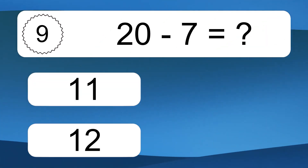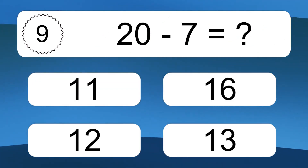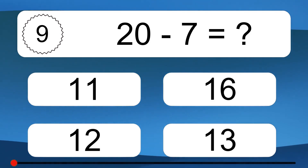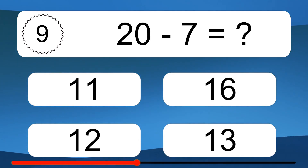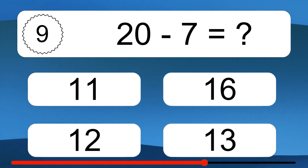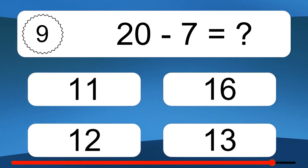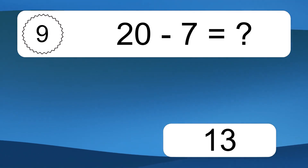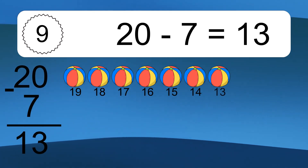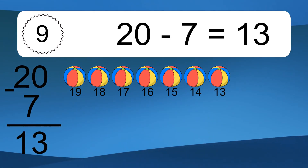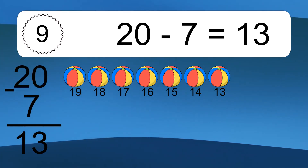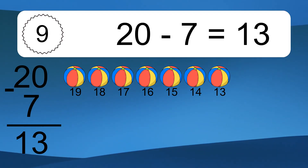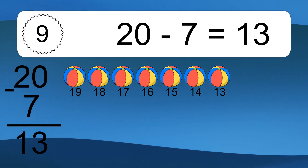20 minus 7 equals what? 20 minus 7 equals 13. Let's count it! 19, 18, 17, 16, 15, 14, 13.